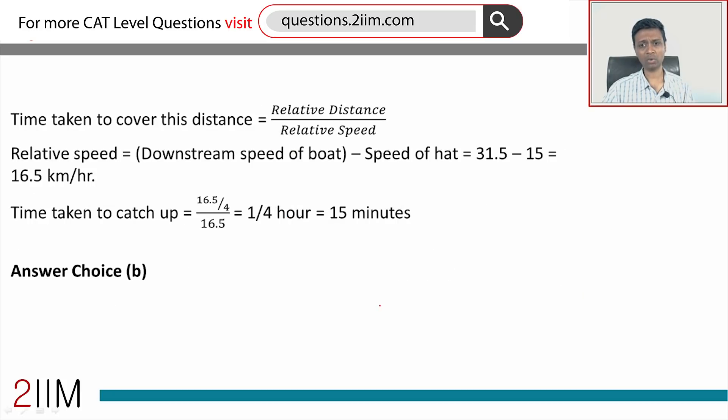Now that they realize this, they turn around and come back to catch it. How quickly will they catch us? The relative distance by relative speed. Relative distance is 16.5 by 4. Relative speed is downstream speed of the boat minus speed of the hat.